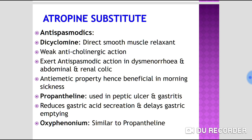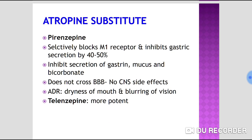Propantheline is used in peptic ulcer and gastritis by reducing gastric acid secretion and delaying gastric emptying time. Oxyphenonium is similar to propantheline. Pirenzepine and telenzepine selectively block M1 receptors, inhibiting gastric acid secretion by 40–50% and also inhibiting secretion of gastrin, mucus, and bicarbonates. They do not cross the blood-brain barrier so no CNS effects, though dryness of mouth and blurring of vision may occur. Telenzepine is more potent than pirenzepine.